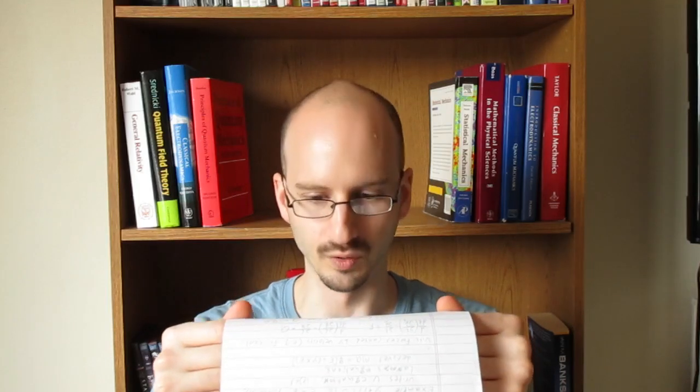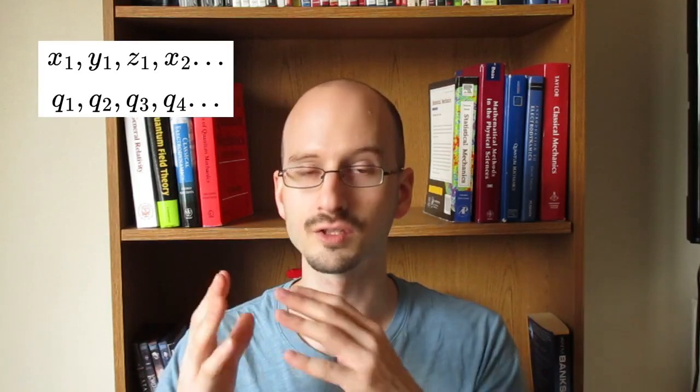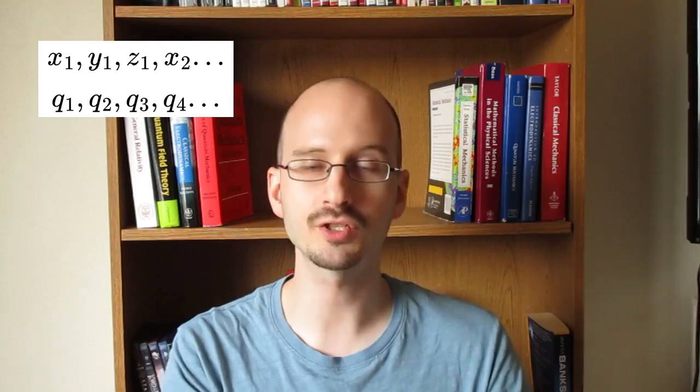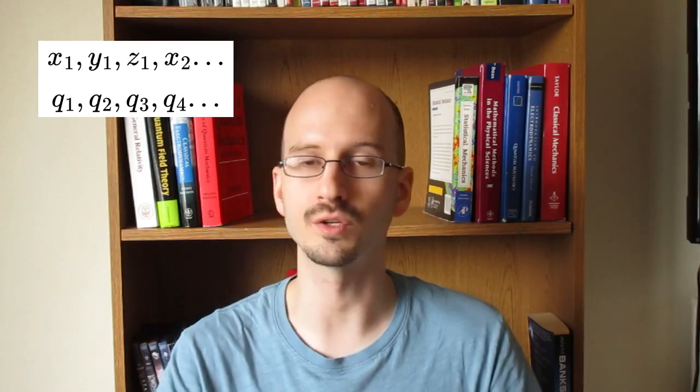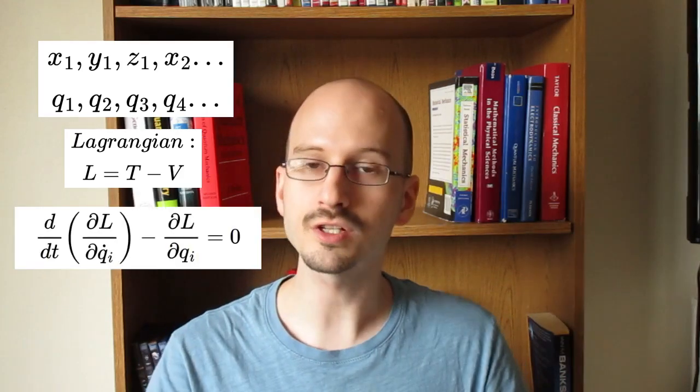Section 1.6 summarizes the chapter and then gives examples of using generalized coordinates. We've talked about how to treat holonomic systems with applied forces derivable from potentials and workless constraints. We can construct kinetic energy and potential energy out of generalized coordinates, cues, use them to construct the Lagrangian, plug them into Lagrange's equations, and voila, we've discovered the equations of motion for the system.